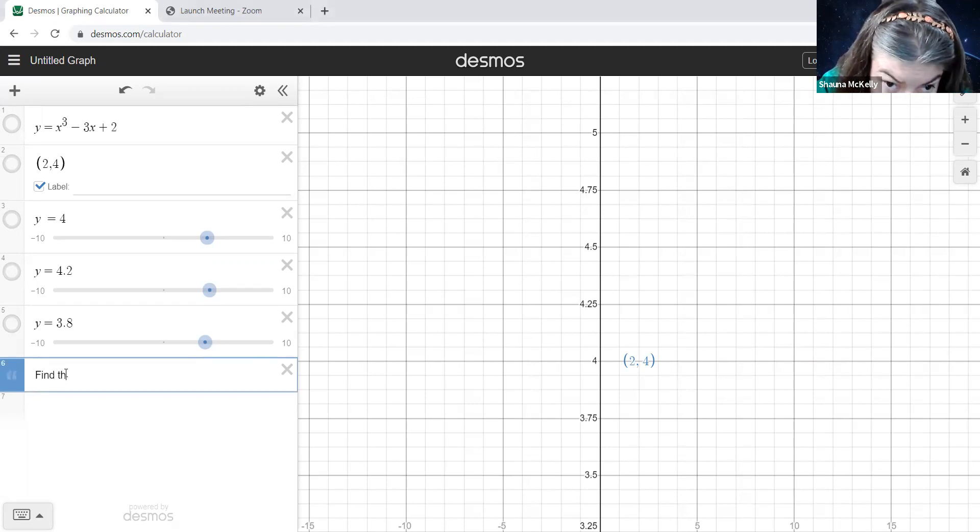Find the value of delta for epsilon equal to 0.2 and also for 0.1. And what we were given was that we were doing the limit as x approaches 2 of x cubed minus 3x plus 2. Sorry, as x approaches 2.